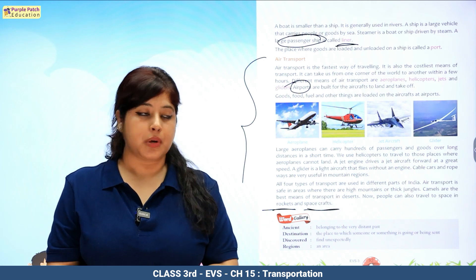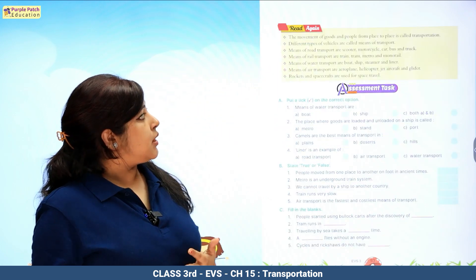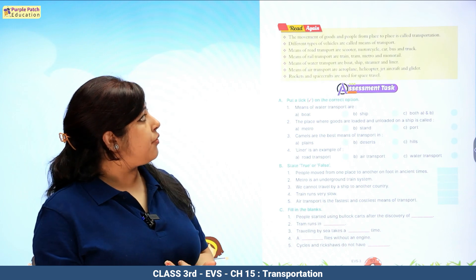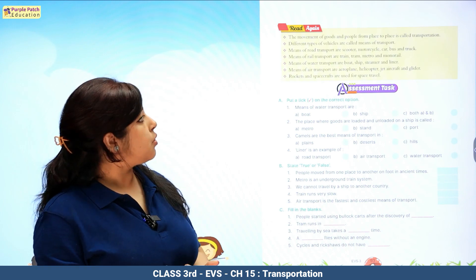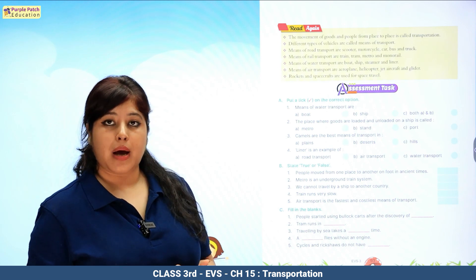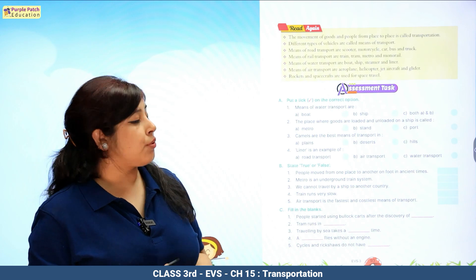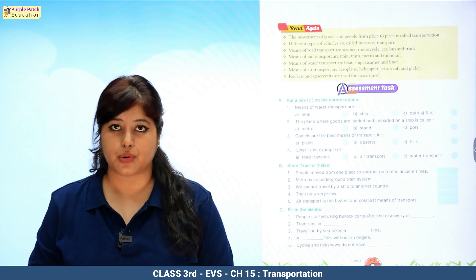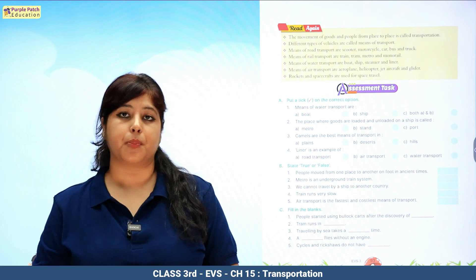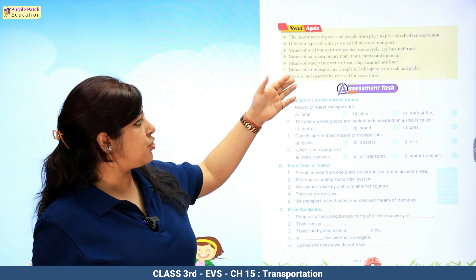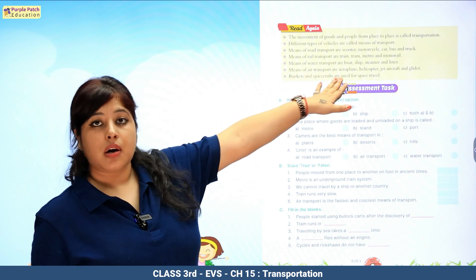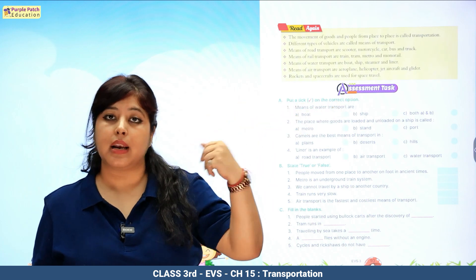Class, we have done with the chapter — now time to recapitulate. The movement of goods and people from place to place is known as transportation. Different types of vehicles are called means of transport. Means of road transport: scooter, motorbike, car, buses. Rail transport: train, trams, metro, monorails. Air transport: aeroplane, helicopter, rocket, spacecraft, jet. Water transport: boat, ship, steamer, and liner.